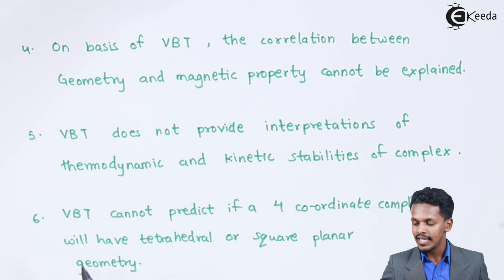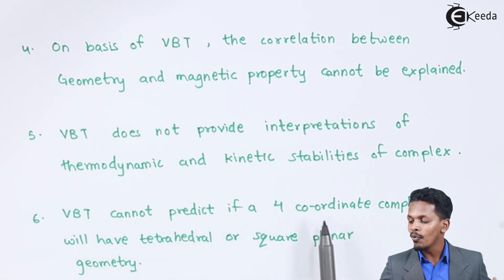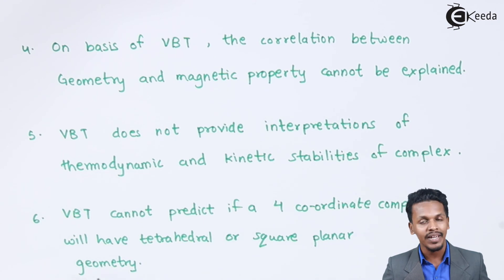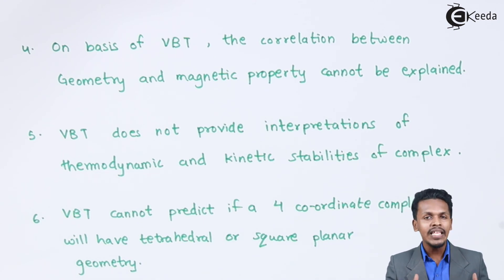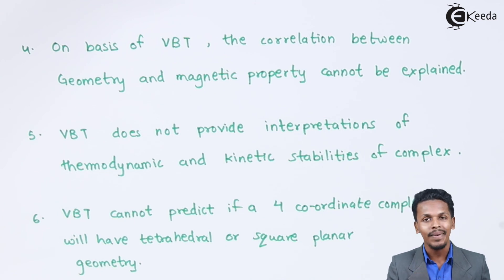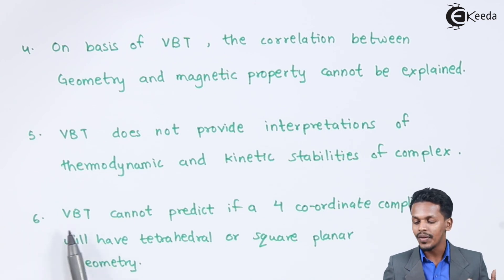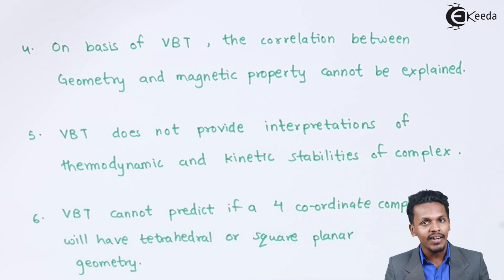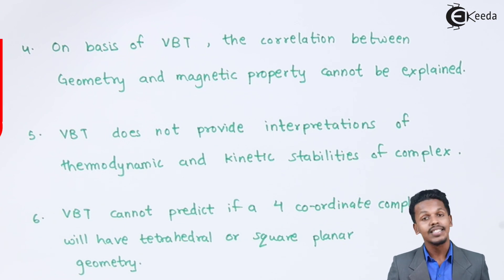Talking about the next point: valence bond theory cannot predict if a four-coordinate complex will have a tetrahedral or square planar geometry. Unless we do certain calculations or predict the central metal ion's hybridization, we cannot say what would be the geometry of the overall complex. For valence bond theory, we cannot explain whether the four-coordinate complex would be tetrahedral, so valence bond theory fails to explain this point.